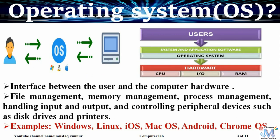The definition of operating system is as follows. We know that operating system is an interface between the user and the computer hardware. When a user sends an instruction or a command to the computer, that goes through the operating system. The operating system makes that command in such a way that it must be understandable by the computer hardware. Once the computer hardware gets the command from the operating system, it processes it and sends the result to the user through the operating system. In this way, the operating system works as an interface between the user and computer hardware.